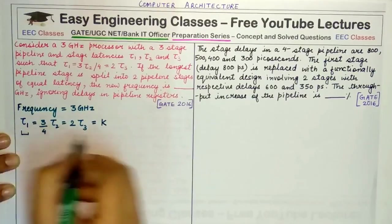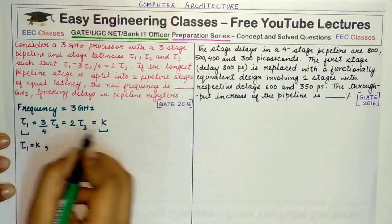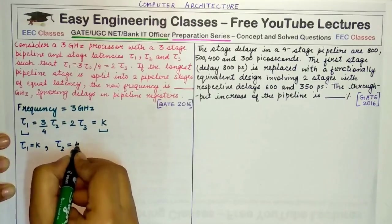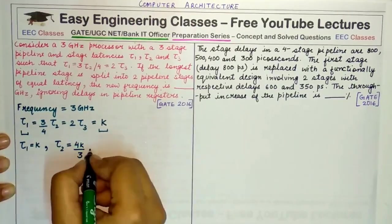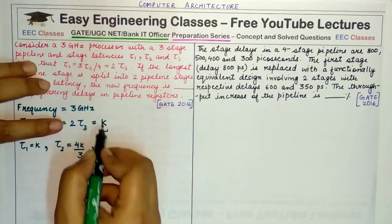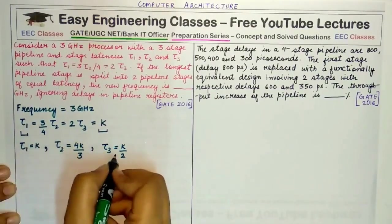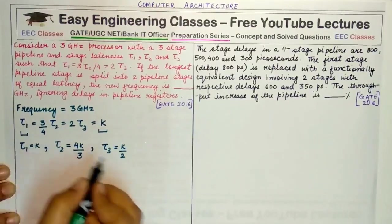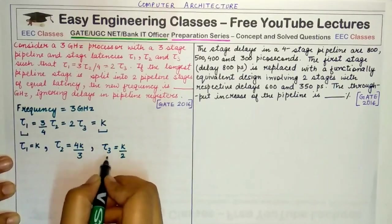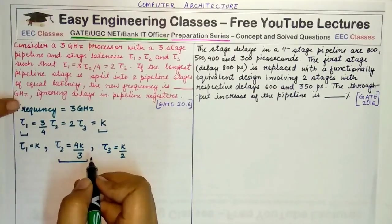The frequency of the existing 3-stage pipeline is 3 GHz. The relation is τ1 = 3τ2/4 = 2τ3. Let each equal a constant k. Then: τ1 = k, from 3τ2/4 = k we get τ2 = 4k/3, and from 2τ3 = k we get τ3 = k/2. So τ1 = k, τ2 ≈ 1.3k, τ3 = 0.5k — τ2 is the maximum latency.